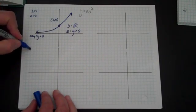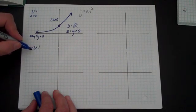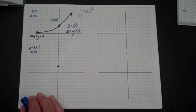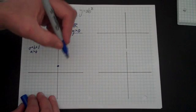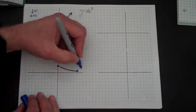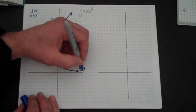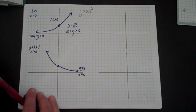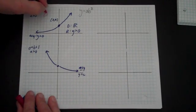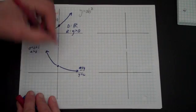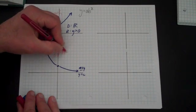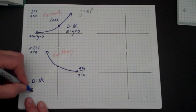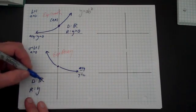If b is between 0 and 1 and a is positive, that's your classic exponential decay function. The initial value is again a, the asymptote is still y = 0, but you approach it from the other direction — it decays. The domain is all real numbers and the range is y is greater than 0.